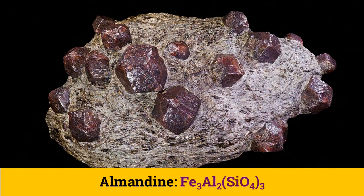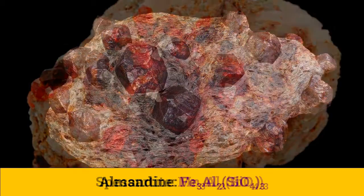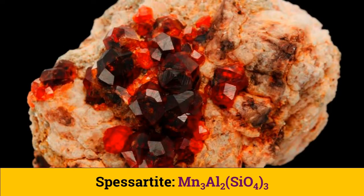Almandine is an extremely common mineral in metamorphic rocks. Its color is deep red to purplish due to the presence of iron, and this color is often regarded as the characteristic garnet color. Spessartine is a rare garnet mostly found in granites and pegmatites. It ranges in color from red-brown to yellow-brown, and its orange occurrence is used as a gemstone.